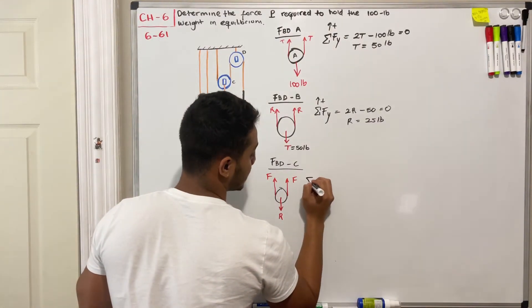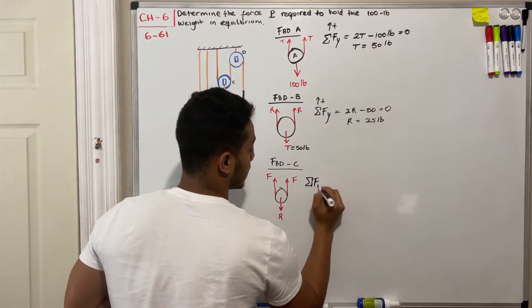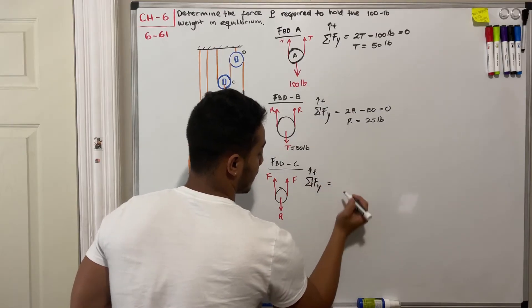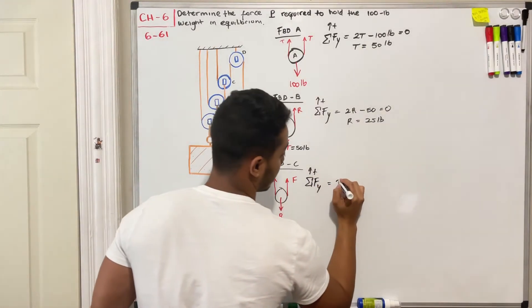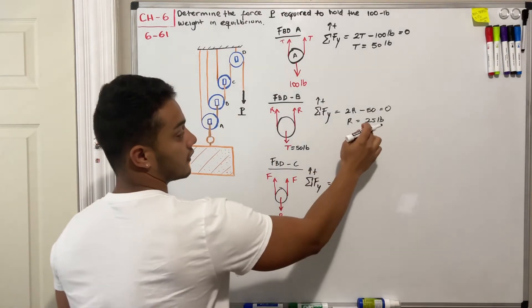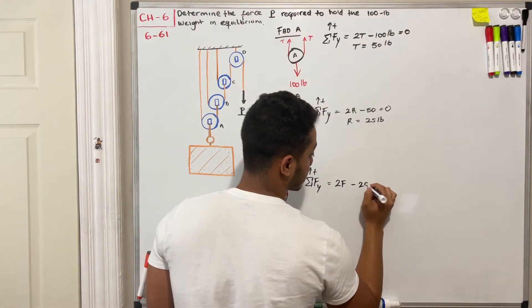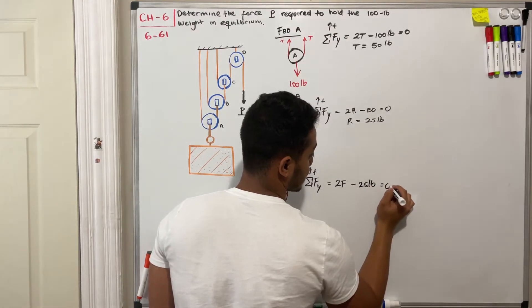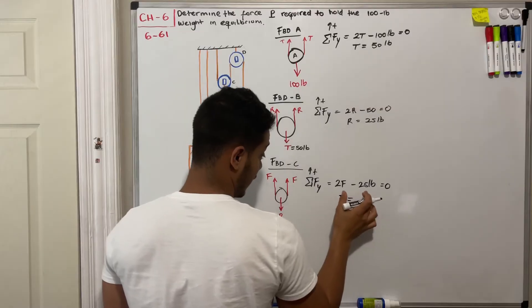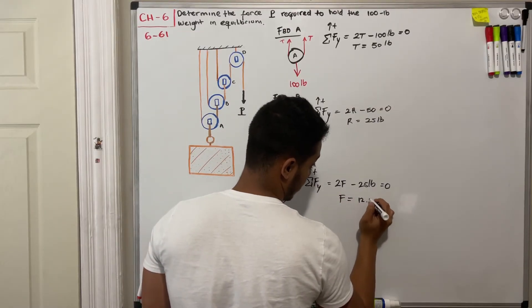If we do sum of forces in the y direction, assuming that going up is positive, what do I have? Well I got 2F minus R, and we found that R is 25, and this should be equal to zero. If we solve for F we will find out that this will be equal to 12.5 pounds.